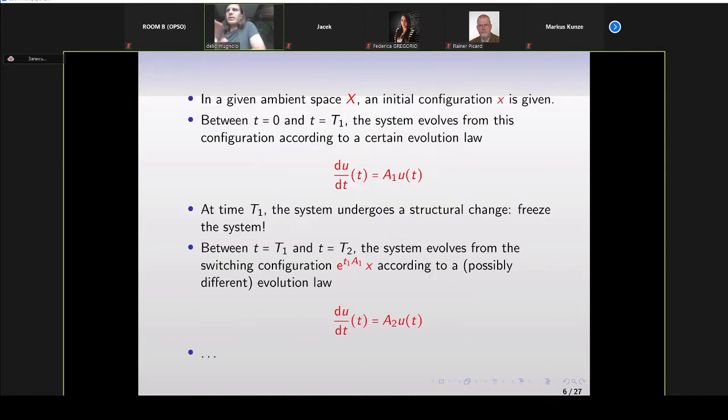Each node is an evolution equation. You stay here for a while, and then at the next time step, you freeze everything, and then the alarm rings, and then you are told to jump to the next system, to the next physical system. And then you let it evolve for a while, according to a certain evolution equation, and then you move on to another evolution equation. So mathematically, we have a certain ambient space, say X, and an initial configuration, small x is given. You start with a certain evolution equation, a1 is just any well-behaved operator. And then between time 0 and capital T1, you just let the system evolve with initial condition x.